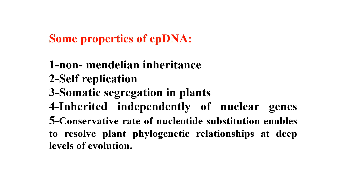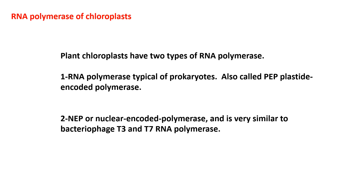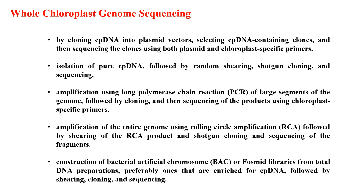Some key properties of chloroplast DNA include: first, non-Mendelian inheritance; second, self-replication; third, somatic segregation in plants; fourth, inherited independently of the nucleus; and fifth, a conservative rate of nucleotide substitution enabling resolution of plant phylogenetic relationships at deep evolutionary levels. Regarding self-replication, chloroplasts have two types of RNA polymerase: first, a prokaryote-type polymerase also called PEP (plastid-encoded polymerase), and second, NEP (nuclear-encoded polymerase), which is very similar to bacteriophage T7 RNA polymerase.